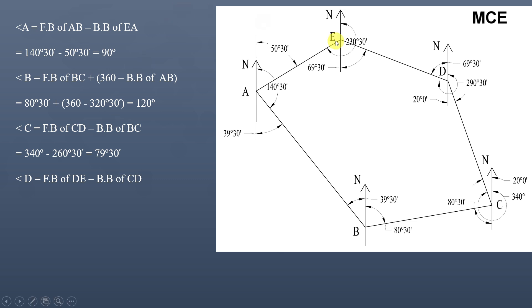Angle D equals the fore bearing of line DE minus the back bearing of line CD. That is 290°30' − 160° = 130°30'.